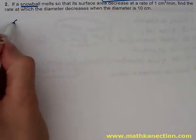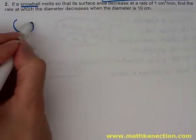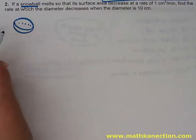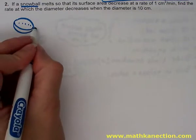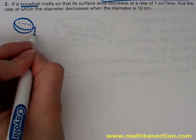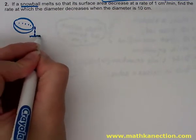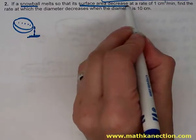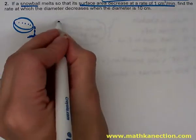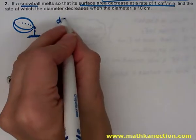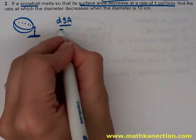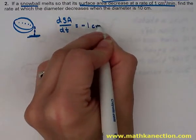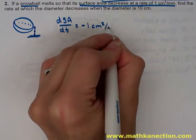In our problem, we have a snowball that's melting. A snowball is going to look like a sphere, so we draw a sketch of a sphere. The given information is that the surface area is decreasing at a rate of one centimeter squared per minute, so dS/dt is equal to negative one centimeter squared per minute.